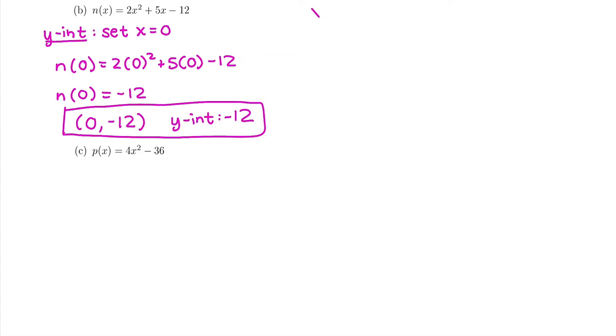Now the tough one here, we're going to find the x-intercept. To find the x-intercept, set y equal to 0. So we want our function, n(x), which is the same thing as y, to be 0. And so we're setting that for 2x² + 5x - 12.